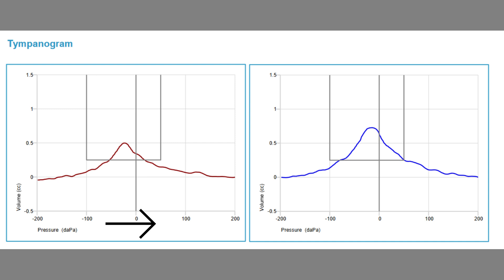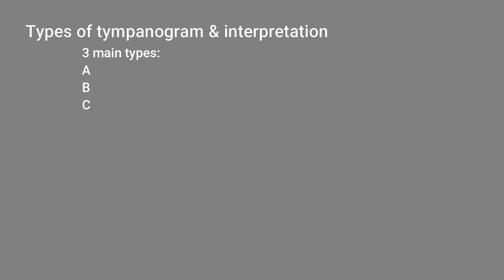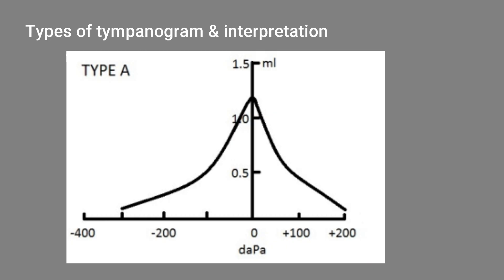On the x-axis of the tympanogram you can see the compliance in centimeter cube (cc). There are three main types of tympanogram: Type A, Type B, and Type C. Type A is the normal tympanogram — a symmetric graph with maximum compliance near zero millimeters of water, and a compliance range from 0.3 cc to 1.5 cc. When eustachian tube function is normal, the peak occurs near zero daPascal.